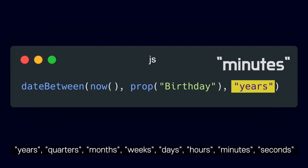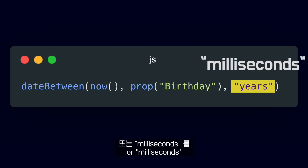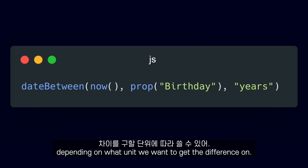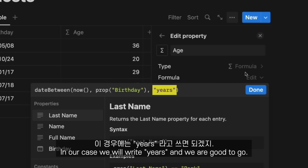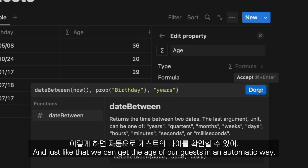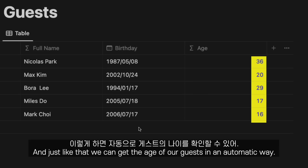Seconds or milliseconds, depending on what unit we want to get the difference on. In our case, we will write years and we are good to go. And just like that, we can get the age of our friends in an automatic way.